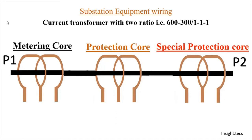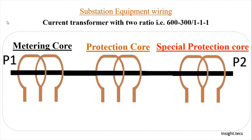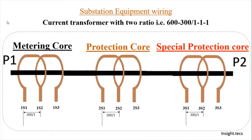Here, P1 and P2 represent the primary winding or the primary core, and to that we have three different cores. As discussed in the previous video, the secondary winding comes with three different cores in the current transformer. Here we have a current transformer with two ratios — 600 or 300 by 1 — meaning it can transform 600 amperes to 1 ampere, and also 300 amperes to 1 ampere. It has three cores: the first is the metering core, the second is the protection core, and the third is the special protection core.